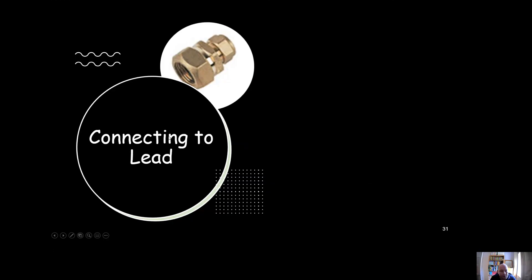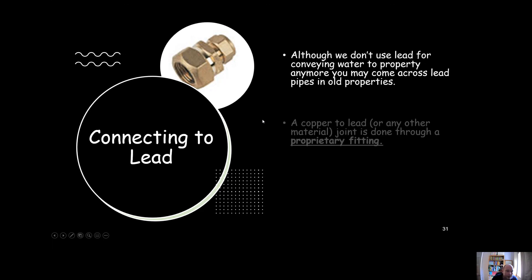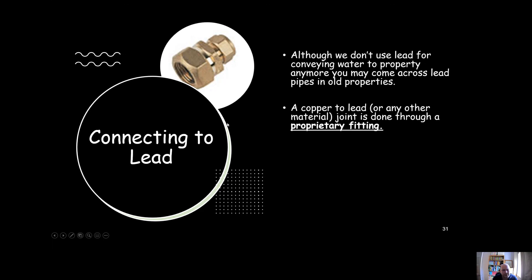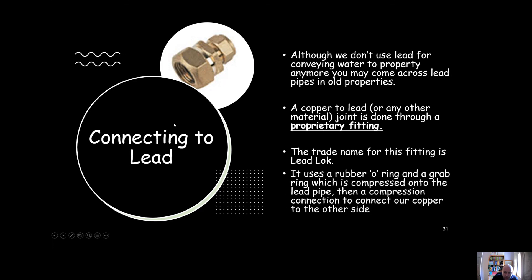If we were connecting to lead, we might use a fancy compression fitting. City and Guilds might call it a proprietary fitting, and they might call it a lead lock, which is what most plumbers would call a lead lock for connecting to lead. But it's basically a compression fitting. It's got a rubber o-ring in there and a grab ring which would be compressed and grip onto the pipe and keep it all watertight.